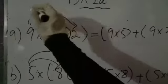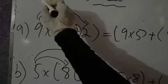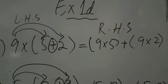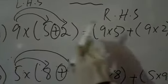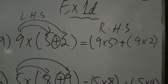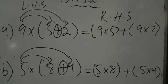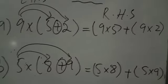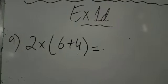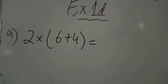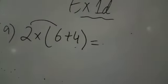This is your left side, so this is called the left hand side. This is on your right hand side, so this is called the right hand side. When the answer of the left hand side and the answer of the right hand side are equal, then the distributive property of multiplication will be satisfied.